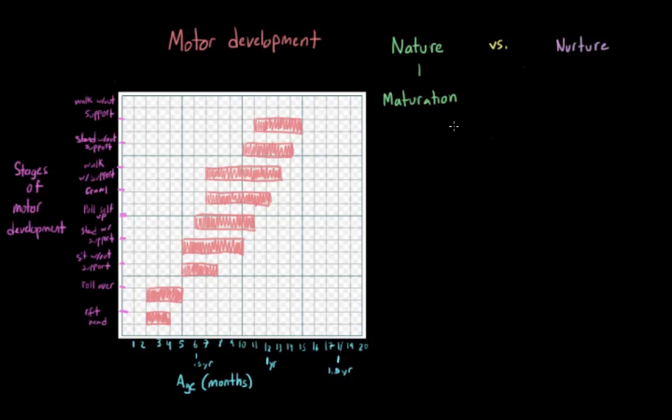We know that motor skills are driven by internal biological factors for a number of reasons. For example, we know that identical twins typically begin to walk on the same day, much closer than non-related infants of the same age. Other evidence for this is the fact that children all over the world tend to develop skills at the same time and in the same order.